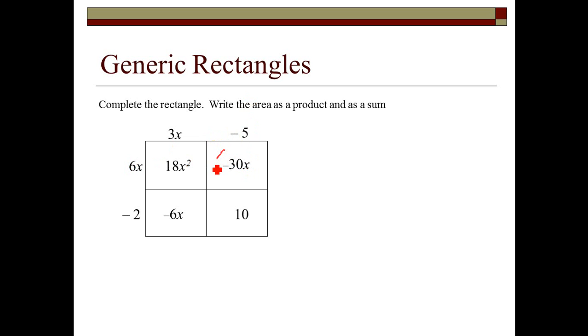And again, this diagonal right here, we can combine when we write our sum. So my product, I've got 3x minus 5 times 6x minus 2. You could have also written it as 6x minus 2 times 3x minus 5. It doesn't matter the order. Combining my terms, I have 18x squared. Negative 30x plus negative 6x gives me negative 36x plus 10.